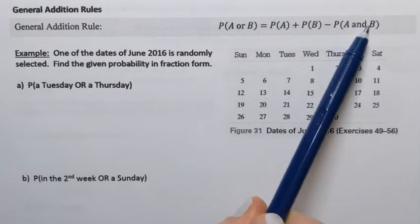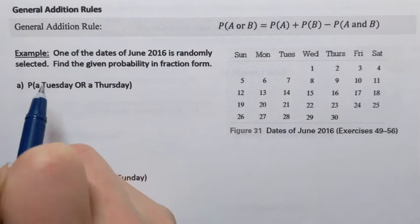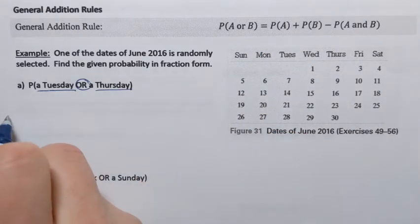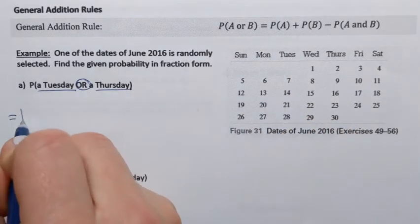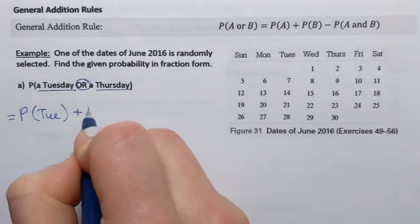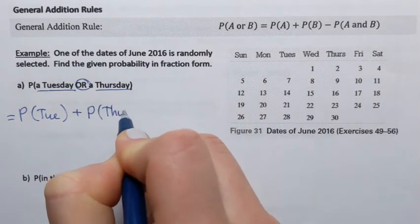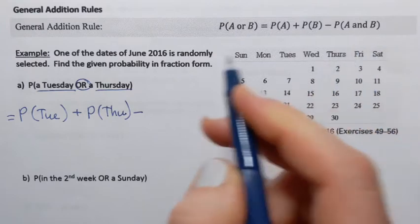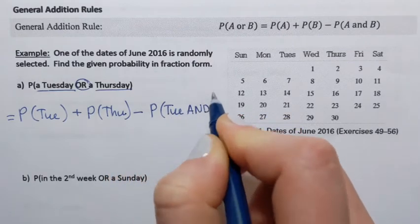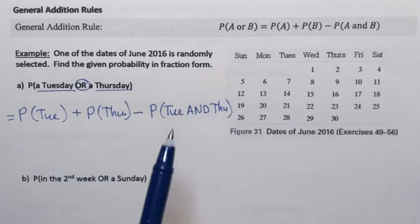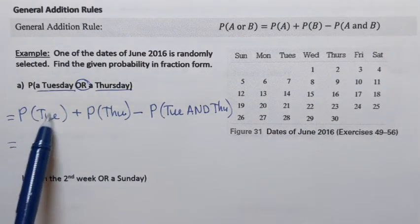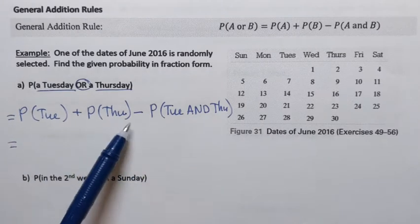Let's apply the general addition rule formula for Tuesday or Thursday. According to this formula, we have to find the probability of the first event — the probability that the day is a Tuesday — add the probability of the second event, Thursday, and subtract the probability of A and B, which is the probability of Tuesday and Thursday. In other words, the probability that the selected day is both Tuesday and Thursday. Once you've expanded the formula in general form, focus on finding the probability for each.